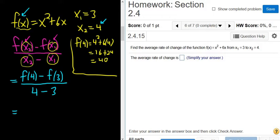f(4) is 40. So now we're going to come back up here and replace this with 40. Minus. And now we want f(3). So f(3), we just replace all of the x's here with 3. So we get 3² + 6 times 3.